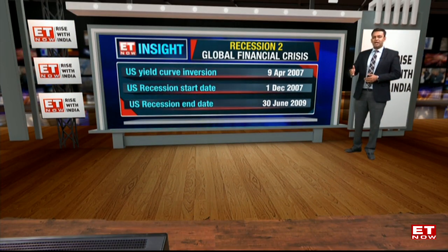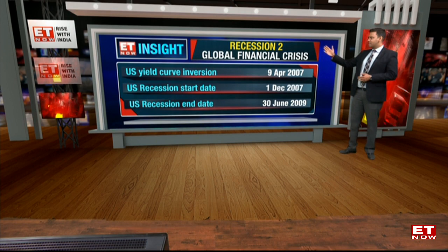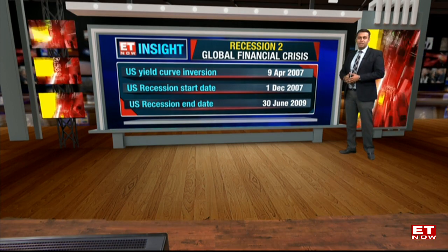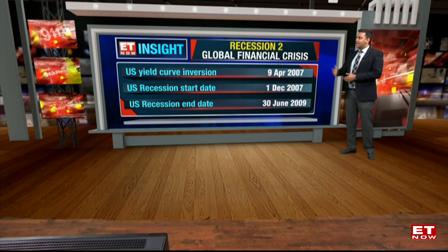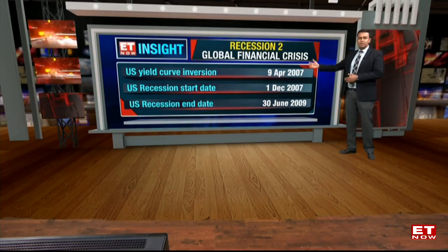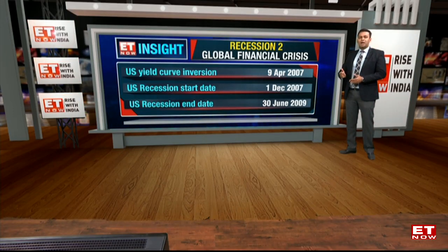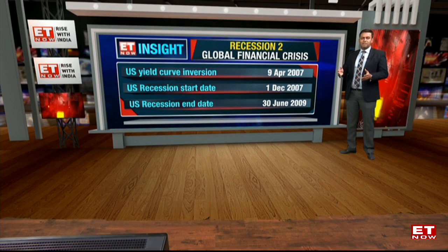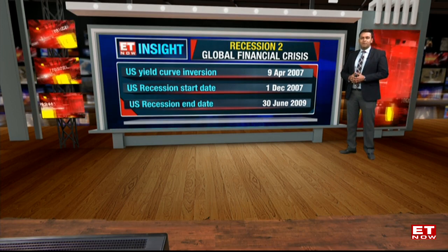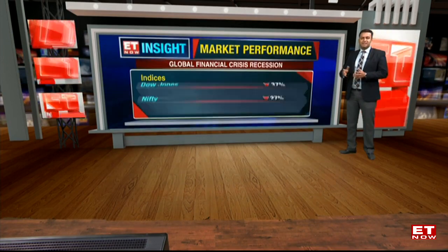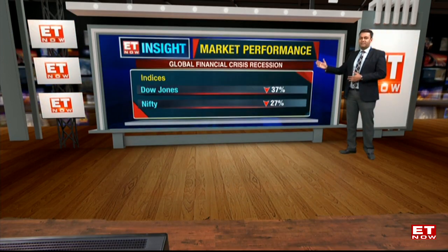Moving on to the global financial crisis, you can see that the 9th of April 2007 is when the yield curve inverted, and a little later than that the US markets slipped into recession. How did the markets react to this? Of course, all of us know the global financial crisis that was there — the Nifty as well as the Dow Jones slipping about 27% to 37% odd.